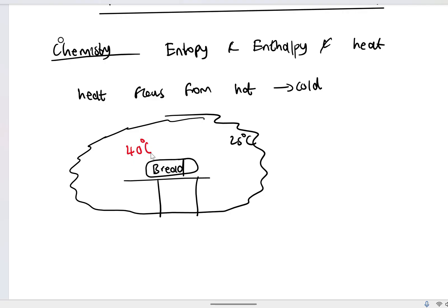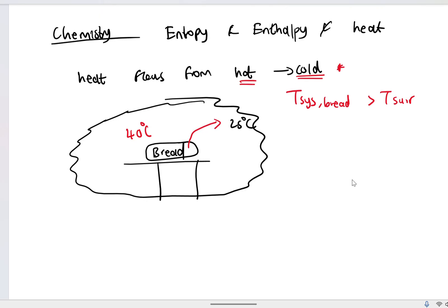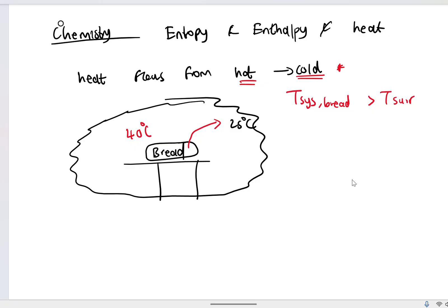How will heat flow? Well, the temperature of the system, which is your bread in this case, is more than the temperature of the surroundings. So where will heat flow? Heat will flow from the bread to the surroundings, because heat always flows from hot to cold spontaneously, meaning you mustn't add any energy to it for it to happen. It happens on its own. So that also backs up the second law of thermodynamics, where the entropy of the universe must increase for any process which is happening spontaneously.